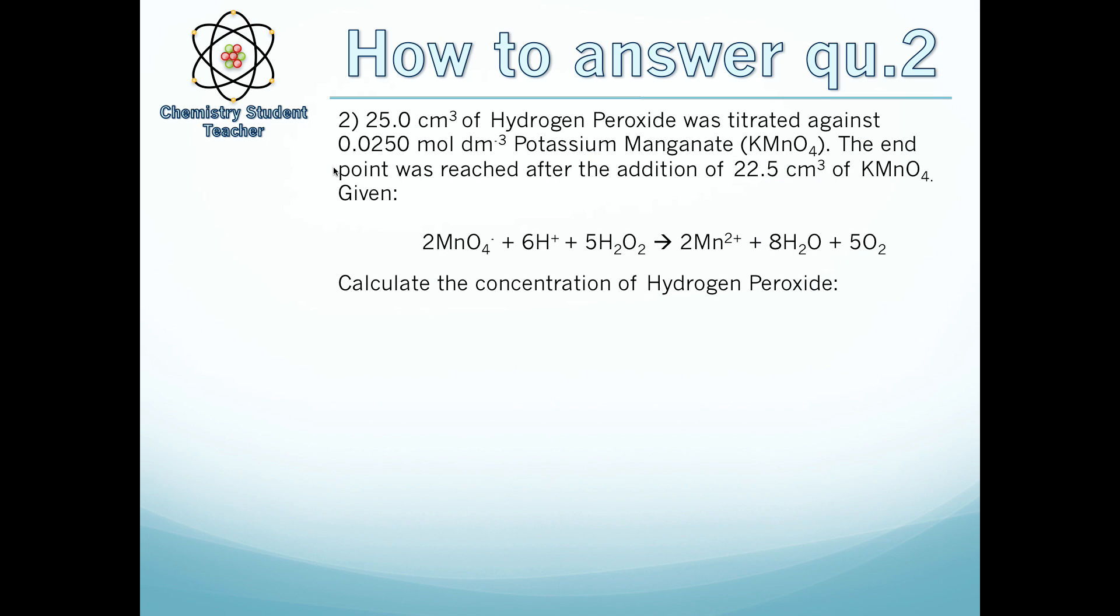Now question two. 25.0 cm³ of hydrogen peroxide was titrated against 0.0250 mol dm⁻³ potassium manganate. The endpoint was reached after the addition of 22.5 cm³ of KMnO₄. Given that equation, calculate the concentration of hydrogen peroxide. This question is very similar to the previous one except we have some different ratios involved. First, we'll do the same as before: n = C × V / 1000.